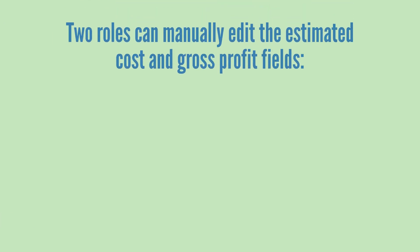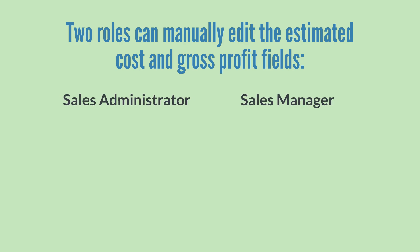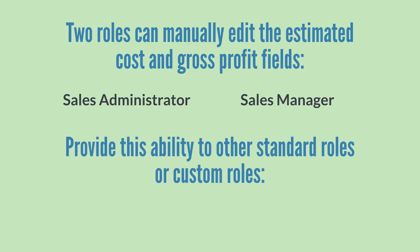When you enable gross profit, two roles automatically have the ability to manually edit the estimated cost and gross profit fields on transaction lines: the Sales Administrator and the Sales Manager. You can provide this ability to other standard roles or custom roles by giving those roles the permission Override Estimated Cost on Transactions. Note, however, that this is a powerful permission and you may not want to give it out too liberally.